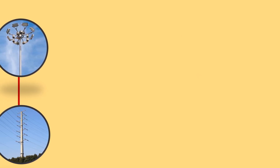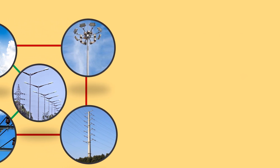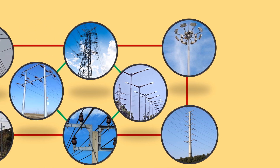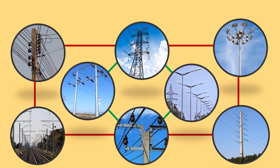Electric poles play an important role in power system. They are used to give support to the overhead lines. Different types of poles are used in different places and different applications. While selecting a pole, that pole should have some properties like a longer lifespan, low cost, and good mechanical strength.